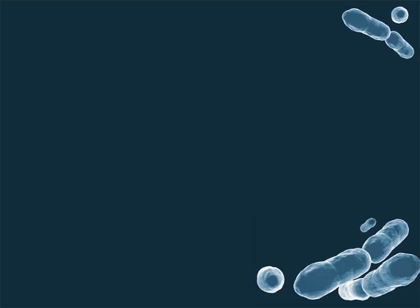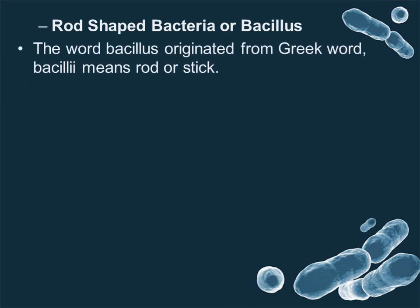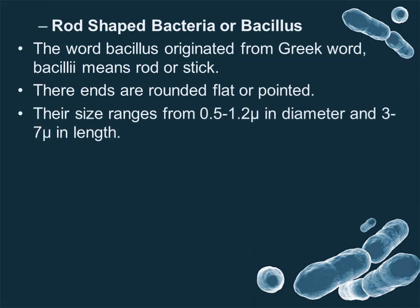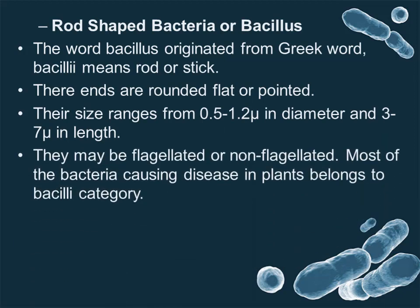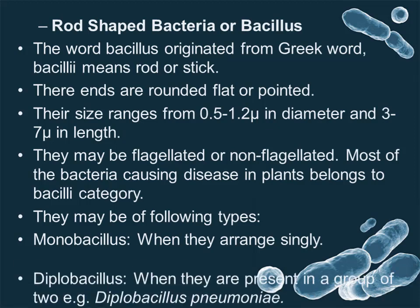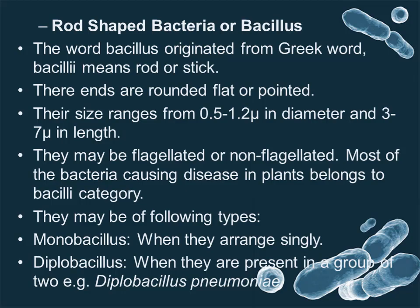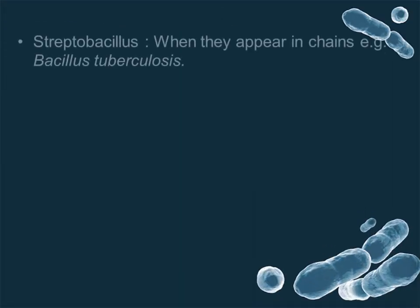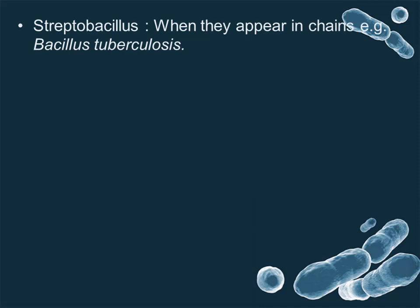Rod-shaped bacteria are bacilli. The word bacillus originated from Greek, meaning rod or stick. Their ends are rounded, flat, or pointed. Their size ranges from 0.5 to 1.2 microns in diameter and 3 to 7 microns in length. They may be flagellated or non-flagellated. Most bacteria causing diseases in plants belong to the Bacilli category. Types include: Monobacillus — arranged singly; Diplobacillus — present in groups of two; Streptobacillus — arranged in chains, for example, Bacillus tuberculosis.